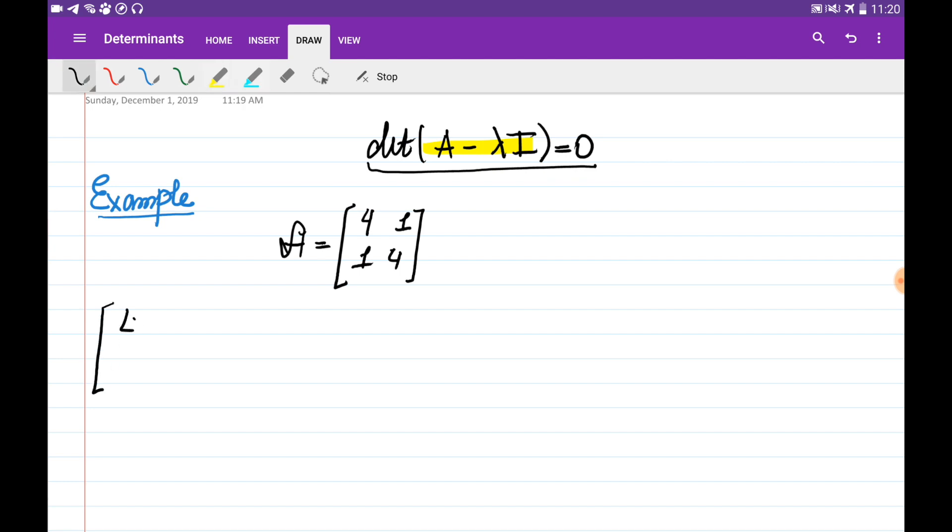This is going to be A, which is [[4, 1], [1, 4]], minus lambda, which we don't know yet, multiplied by the identity matrix, which should be the same size as the A matrix: [[1, 0], [0, 1]]. If we construct this matrix, it's going to be [[4 minus lambda, 1], [1, 4 minus lambda]].